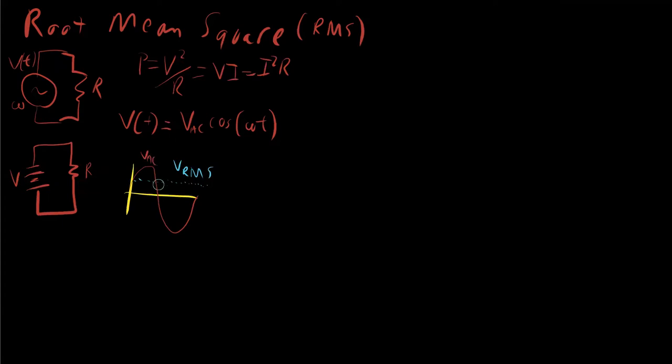And for a purely sinusoidal wave with amplitude V AC, the V RMS, if we have V of T described like this, then V RMS is equal to the V AC divided by root 2.